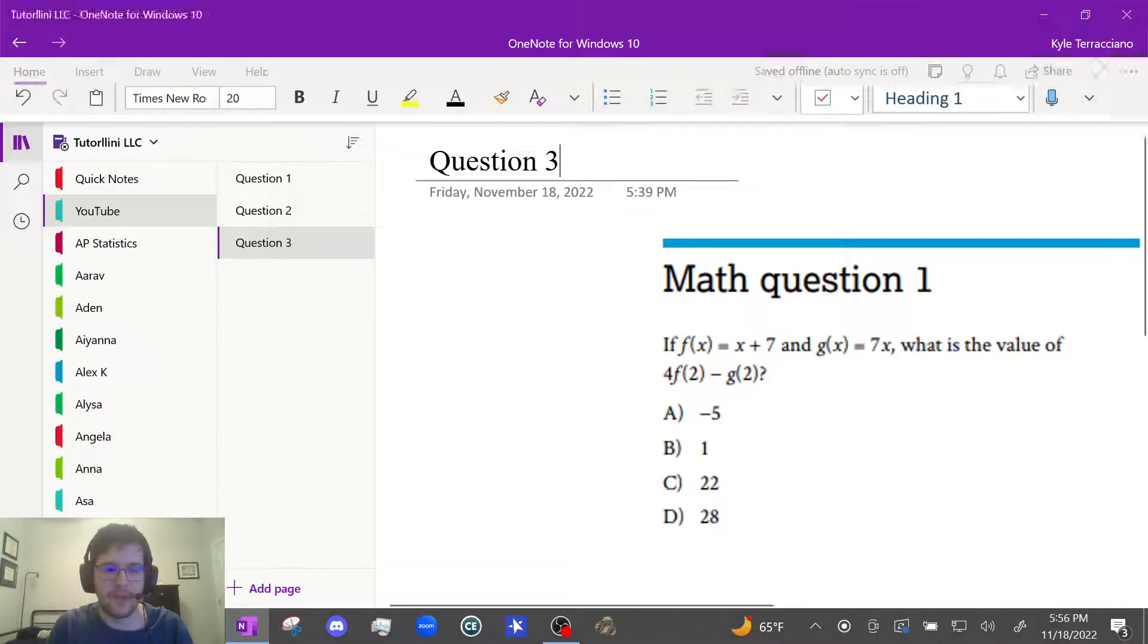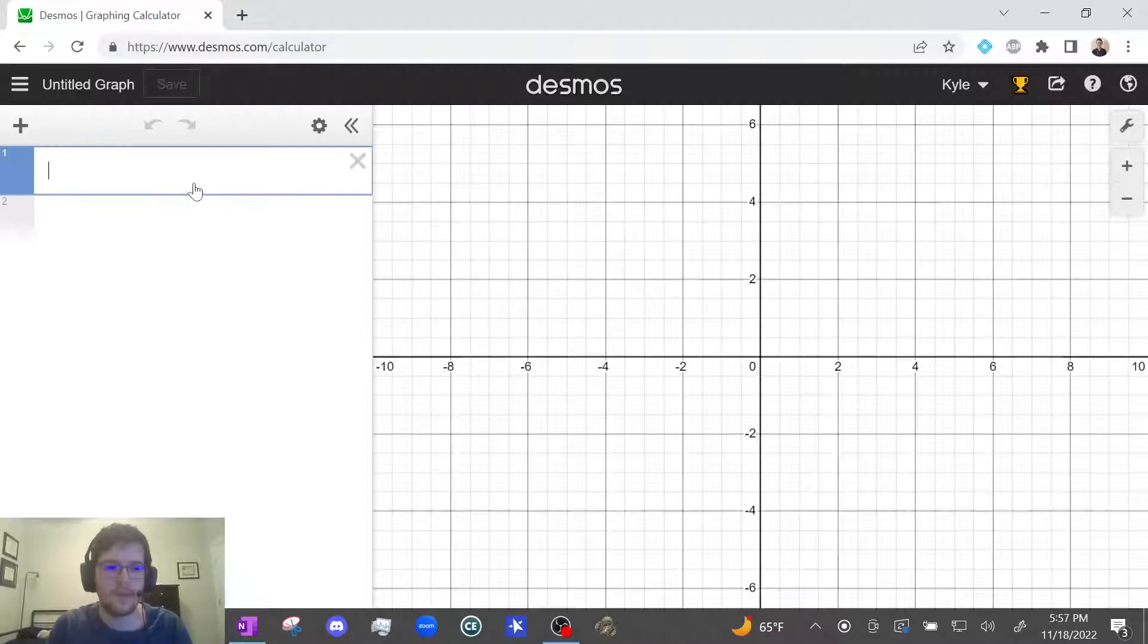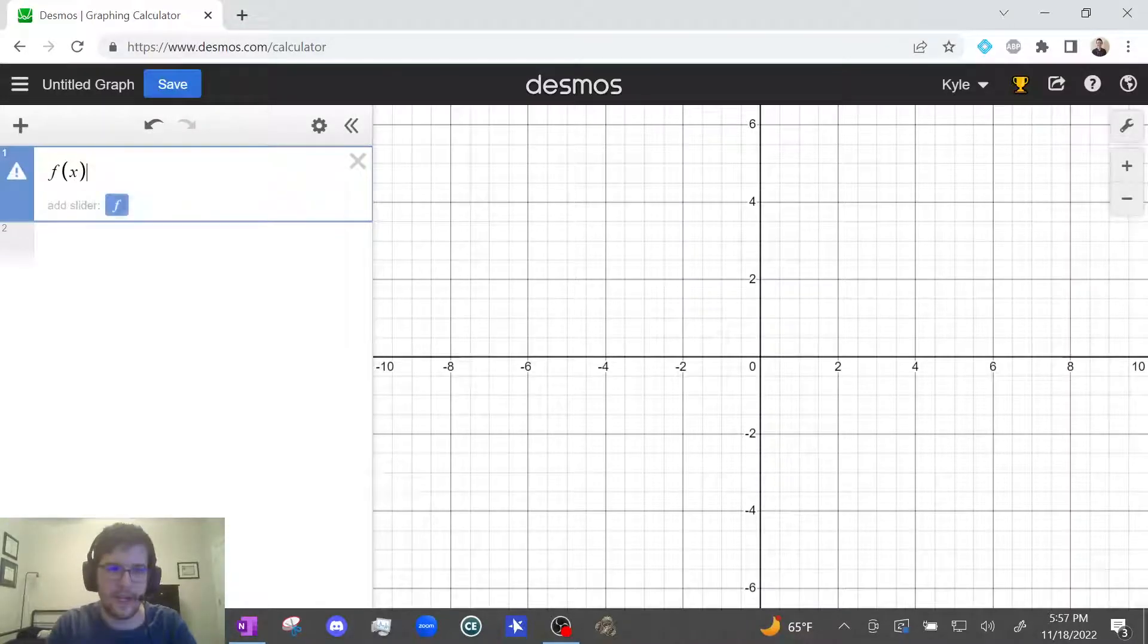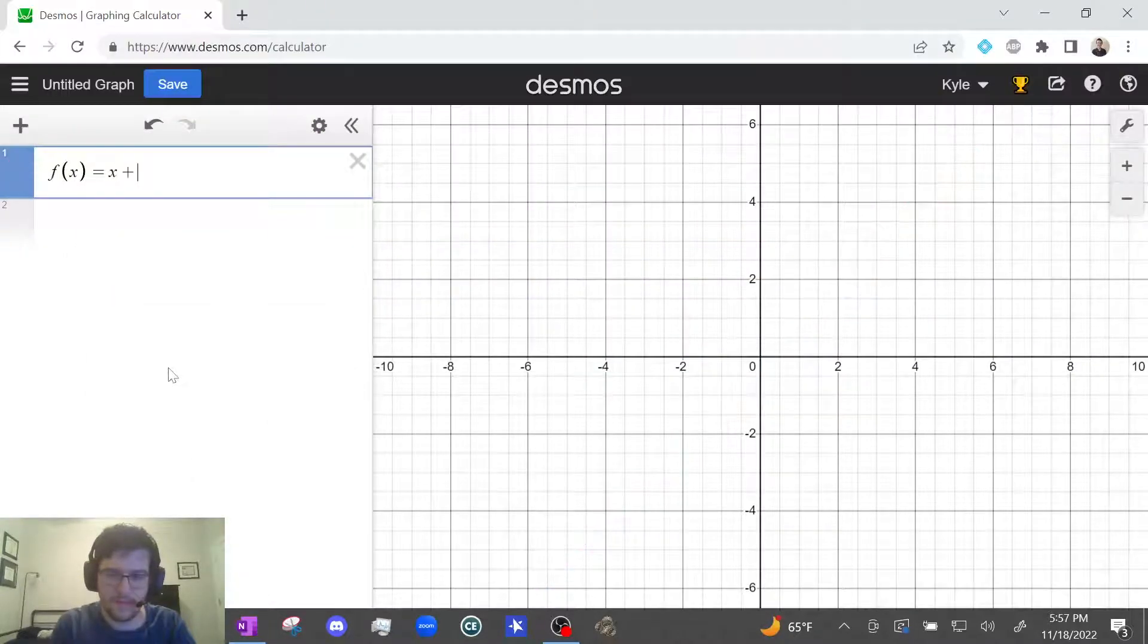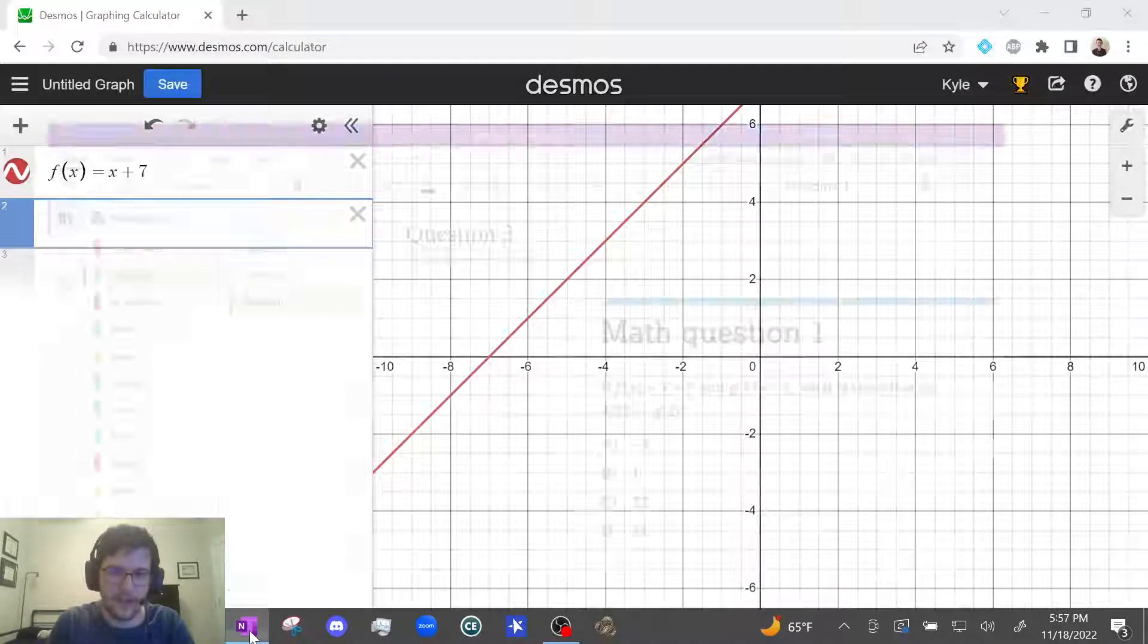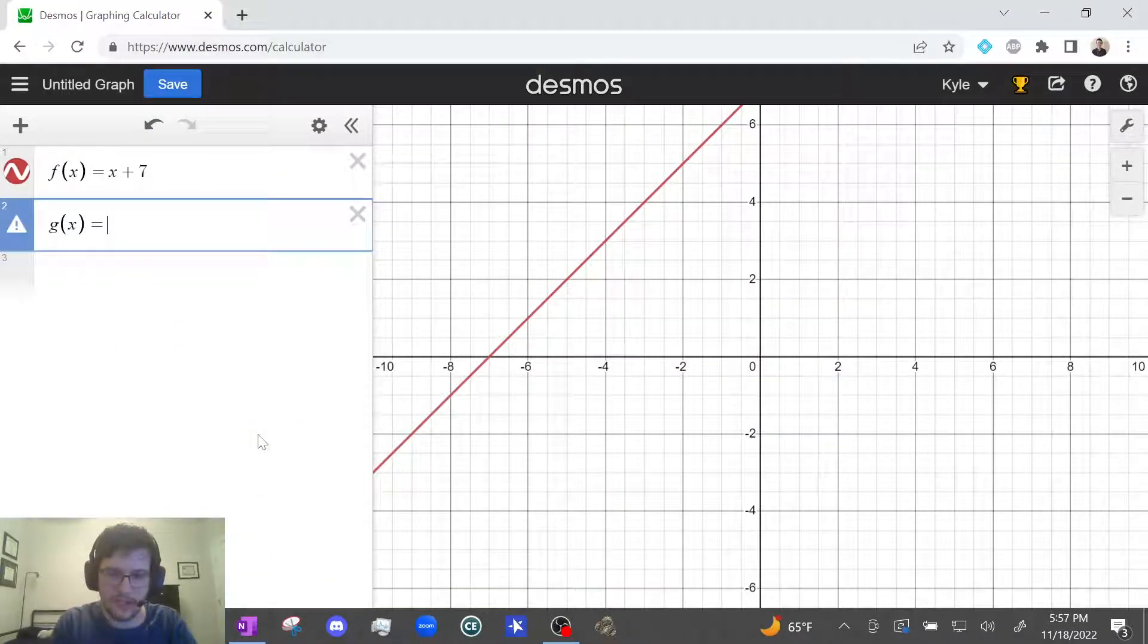So we're going to go to Desmos and type in all these functions. So let me refresh here. So f of x equals x plus 7. And g of x equals 7x.